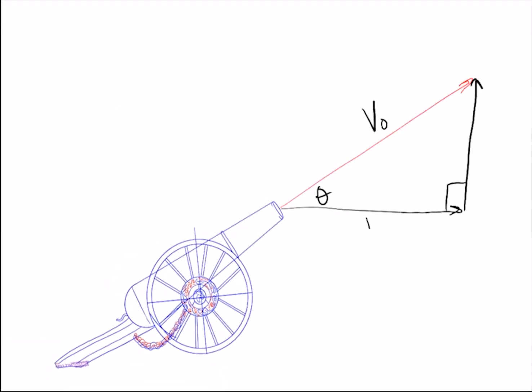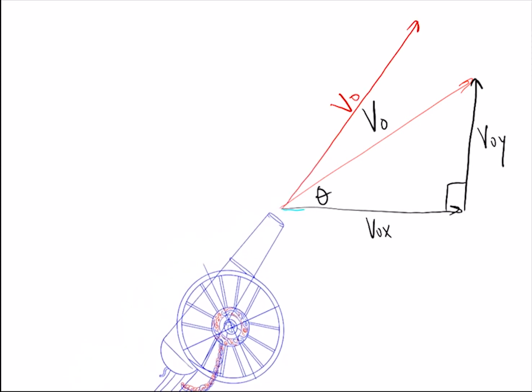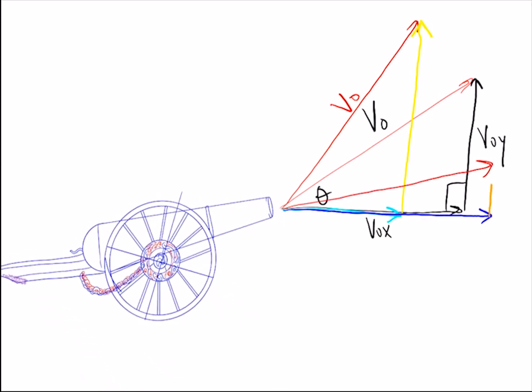The angle she's shot at will determine how far she goes. If she's shot at a steep angle, most of her initial velocity will be in the y-direction, so while she'll be in the air for a long time, she won't be going very fast in the x-direction.